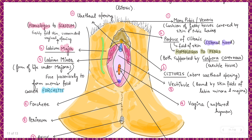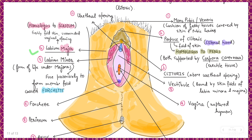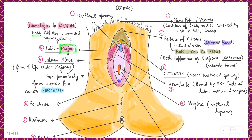The next structure is called the labium majus, and since it is present in a pair, we call it the labia majora. The labia majora is considered homologous to the scrotum — just as the scrotum houses the testes, the labia majora covers and surrounds the vaginal opening.